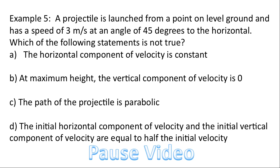Our next example. A projectile is launched from a point on level ground and has a speed of 3 meters per second at an angle of 45 degrees to the horizontal. Which of the following statements is not true? So this is a multiple choice question. Which of the following statements is not true? A. Horizontal component of velocity is constant. B. At maximum height, the vertical component of velocity is zero. C. The path of the projectile is parabolic. Or D. The initial horizontal component of velocity and the initial vertical component of velocity are equal to half the initial velocity. Please pause the video and give this some thought.